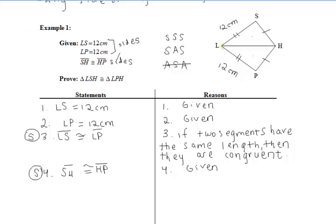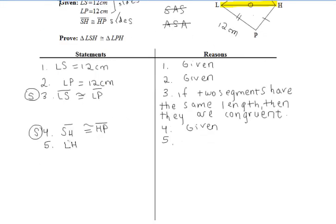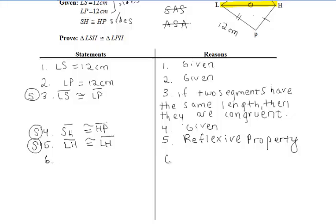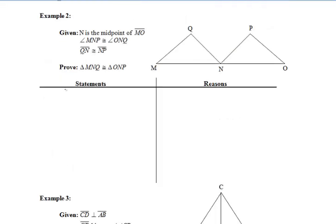We can't assume angles S and P are congruent, but both triangles share side LH — it's completely included in both. So we can use the reflexive property to say LH is congruent to itself, giving us our third pair of congruent sides. At this point, triangles LSH and LPH are congruent by SSS. We listed congruent sides in steps 3, 4, and 5, and you must list those steps in your proof as well.